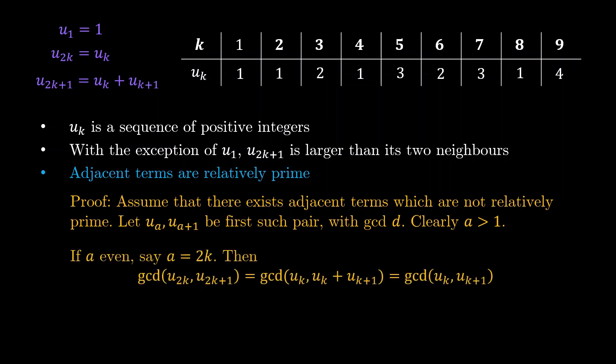If a is even, say of the form 2k, then we can actually write gcd(u2k, u2k+1) equals the gcd of uk and uk+u{k+1}, and this is the same as gcd(uk, uk+1). So we have established that there is an even earlier pair which are not relatively prime, and this is a clear contradiction to our assumption.